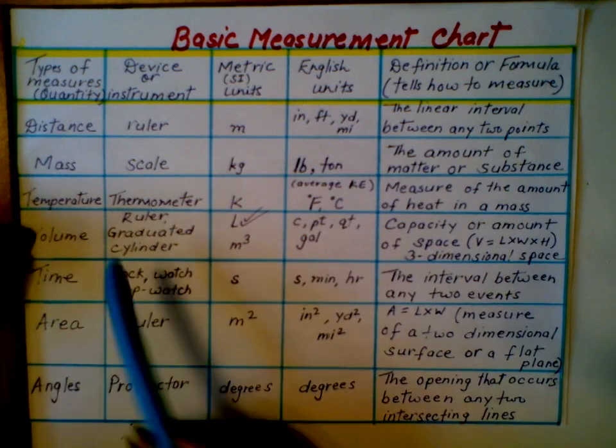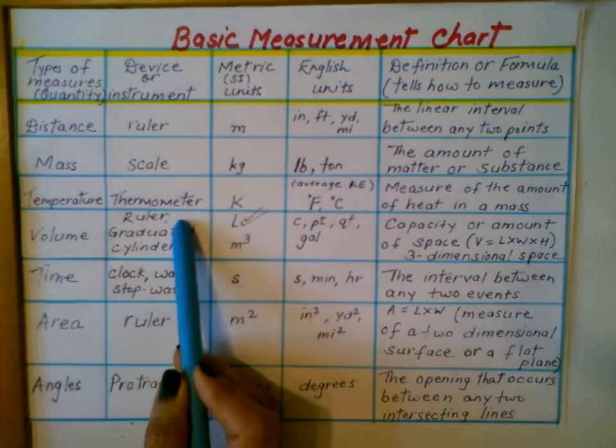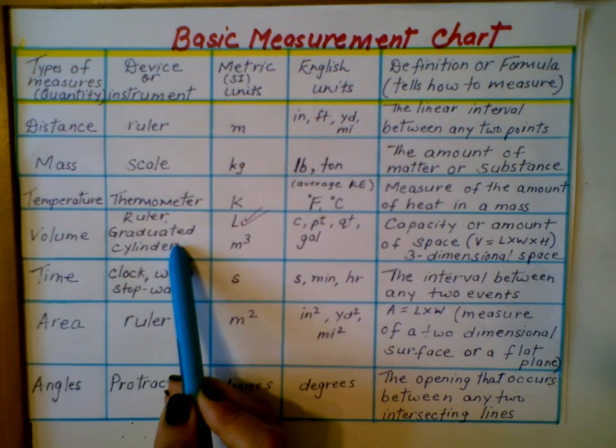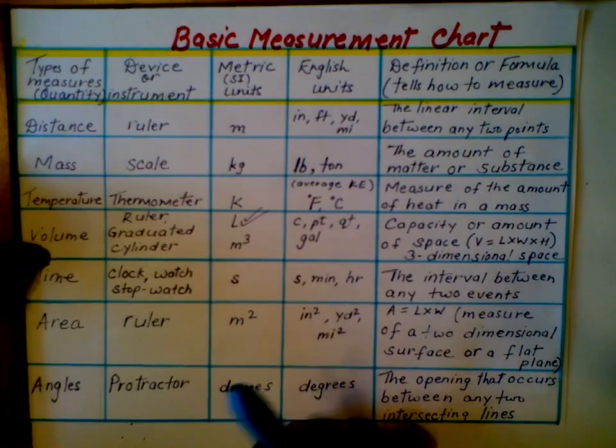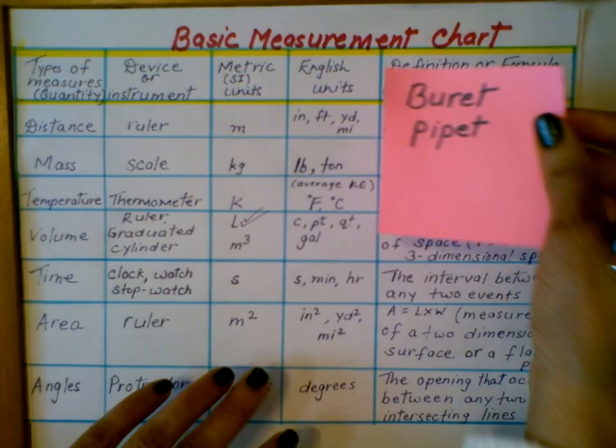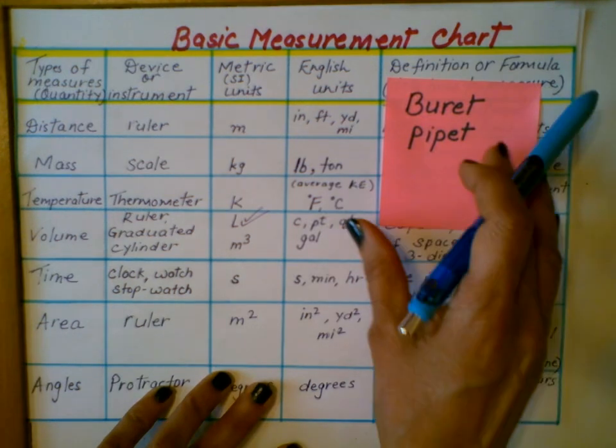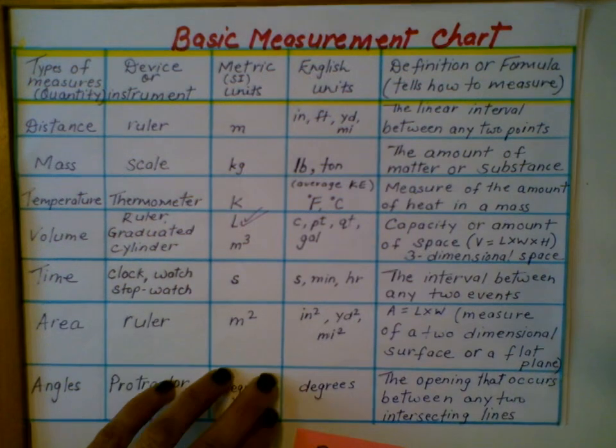For volume, besides ruler for solid objects, you have graduated cylinder for liquids. If you have to measure the volume of liquids more precisely, you can use burette and pipette. These are the devices for measuring more precise volume of liquids.